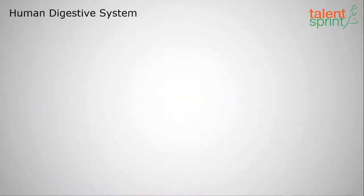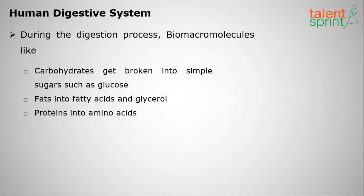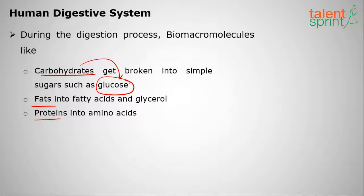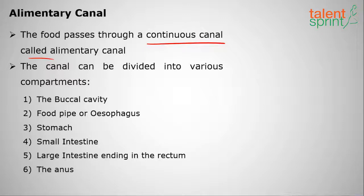During the digestion process, the bio-macromolecules like carbohydrates, fats, and proteins must be broken into simpler molecules. Carbohydrates must be converted into glucose, fats into fatty acids and glycerol, and proteins must be converted into amino acids. The food passes through a continuous canal called the alimentary canal, which includes: the buccal cavity, food pipe or esophagus, stomach, small intestine, large intestine, rectum, and anus — six components in total.